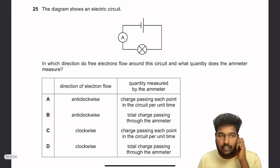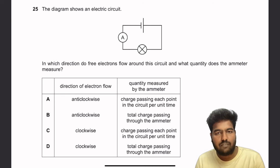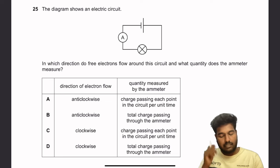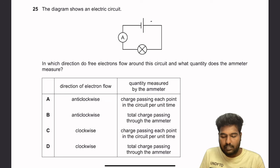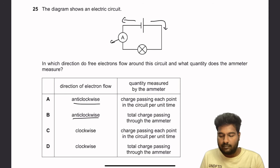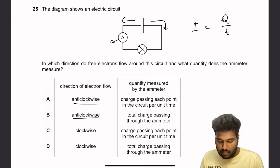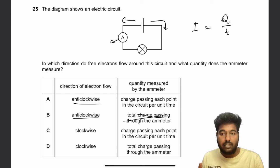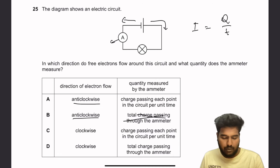Question 25: A diagram shows an electric circuit. In which direction do free electrons flow, and what does the ammeter measure? Conventional current flows from positive to negative, but electrons actually flow from negative to positive — so electrons flow anti-clockwise. The ammeter measures current, which is charge per unit time — specifically, the charge passing each point in the circuit per unit time.